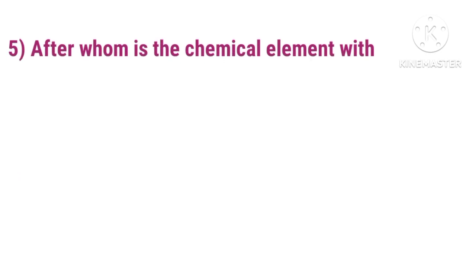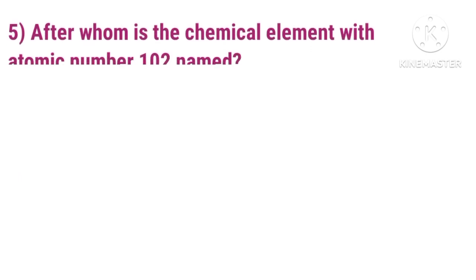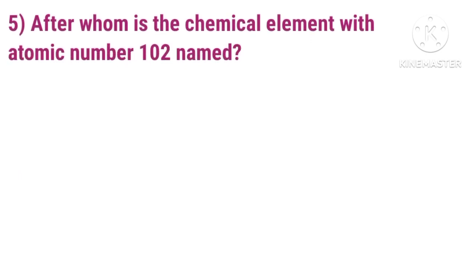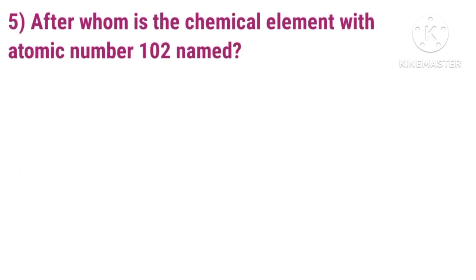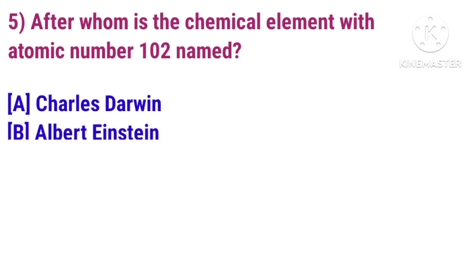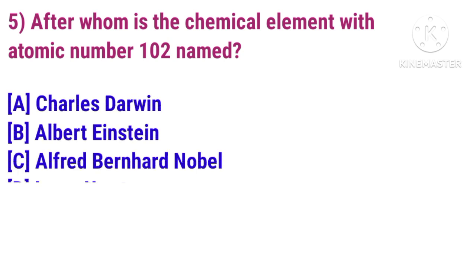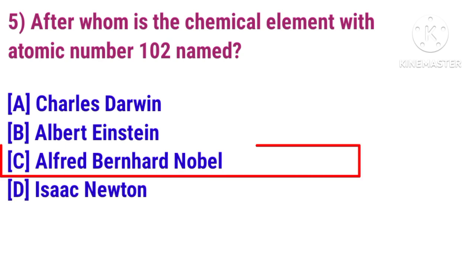Question 5: After whom is the chemical element with atomic number 102 named? Answer is Alfred Bernhard Nobel.